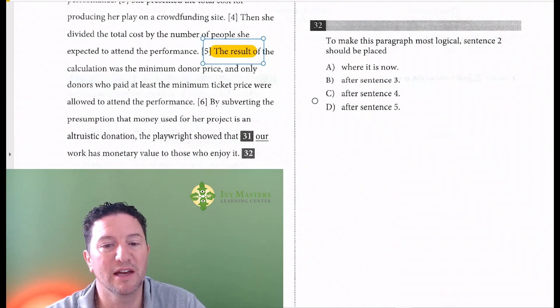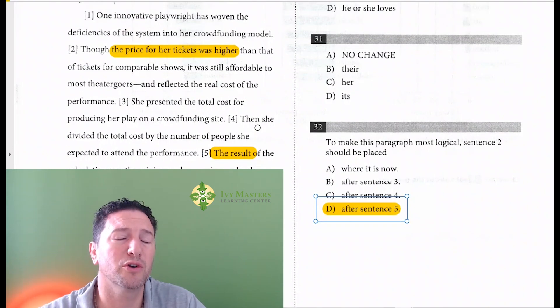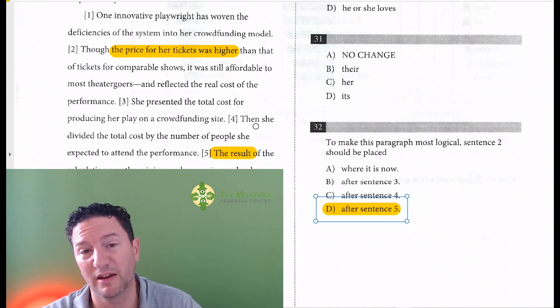So it looks like yes, it's going to be answer choice D. It fits after sentence 5. Because notice in all the sentences before she was not settled on that ticket price.